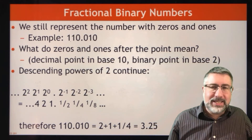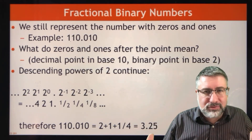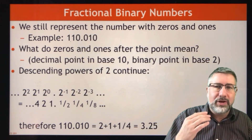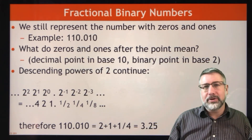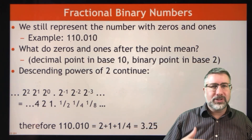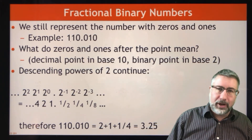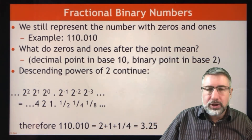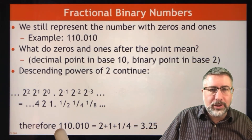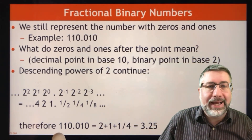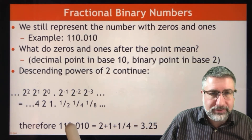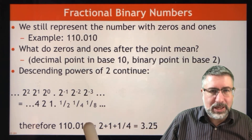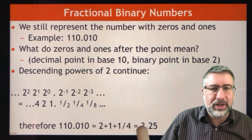Just like with base 10, if you have enough of these fractional powers you can represent any number. This is the essence of a fractional binary number — it's a number less than 1 represented by a negative power instead of a positive power. So if I gave you 110.010, you'd add 4 and 2, there are no ones, no halves, but then there is a quarter. So this should actually be not 3.25 but 6.25 — there's an error here.